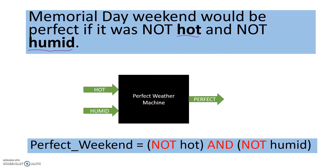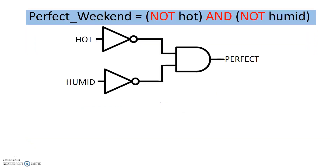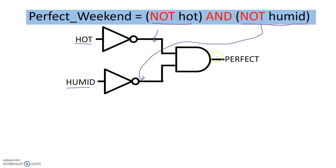So how would we draw that? We have this expression, and we learned how to draw logic gates and cascade them. Our inputs are hot and humid. We pass each through a NOT gate to get NOT hot and NOT humid. Then an AND gate takes NOT hot and NOT humid and creates the AND output to produce the perfect weather signal.